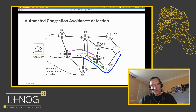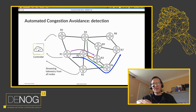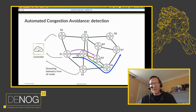You can set a threshold on each link representing your comfort level — for example 85 percent. In this example, the controller has seen through streaming telemetry that traffic on the link between R2 and R3 has reached that congestion threshold. That triggers the controller to look at what LSPs are passing through that link. It knows these three LSPs are passing through, and it knows how much traffic is on each of them, so it has all the information it needs.